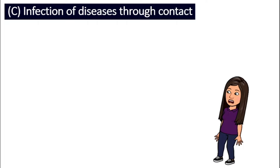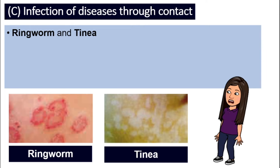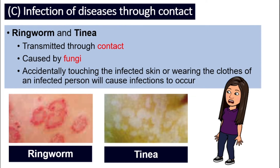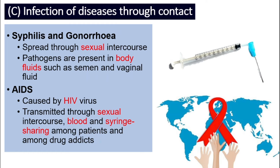Diseases can also be spread through contact — meaning physical touch. The most common are ringworm and tinea, which are skin diseases caused by fungi. They spread when you accidentally touch the skin of an infected person or wear their clothes. Other diseases transmitted through contact include sexually transmitted diseases like syphilis, gonorrhea, and also AIDS. AIDS is caused by the HIV virus and is transmitted through sexual contact and also blood and needle sharing.